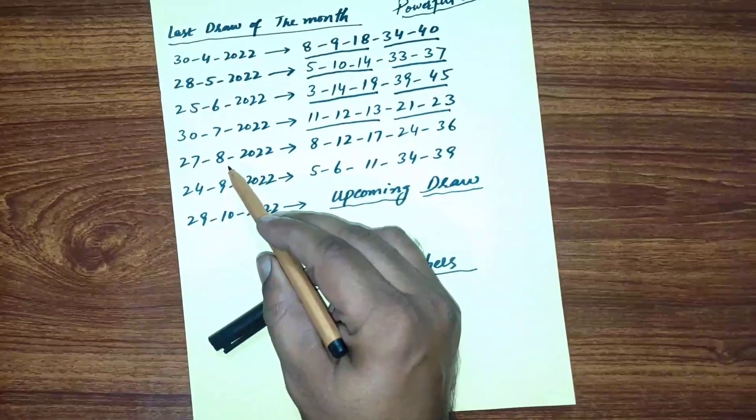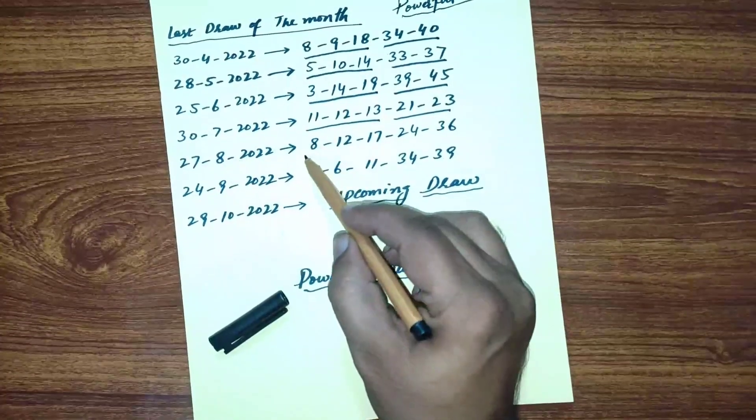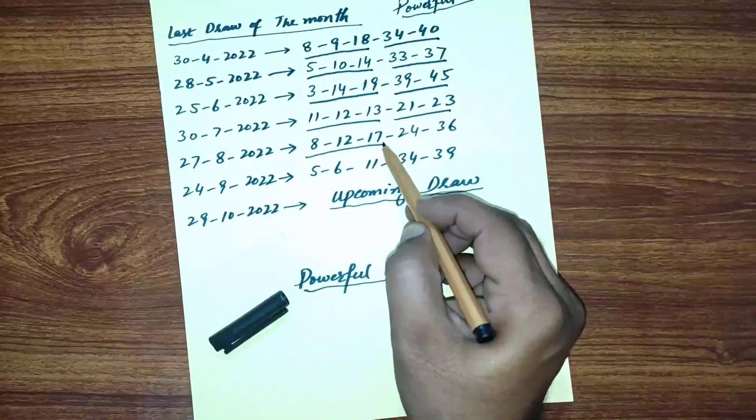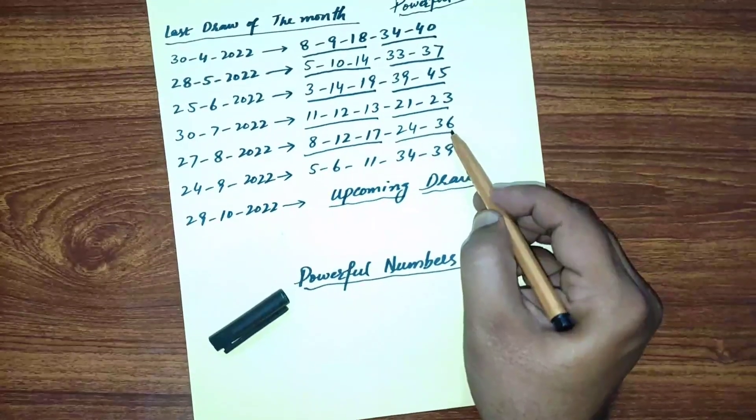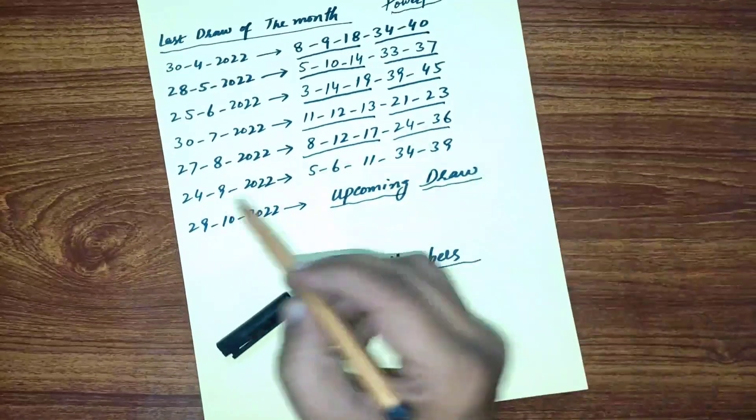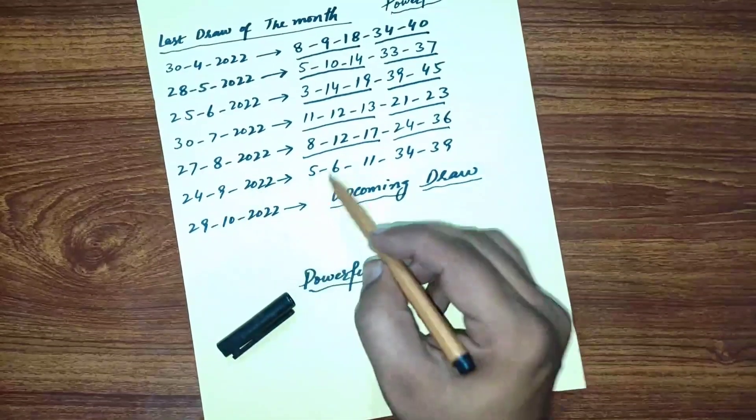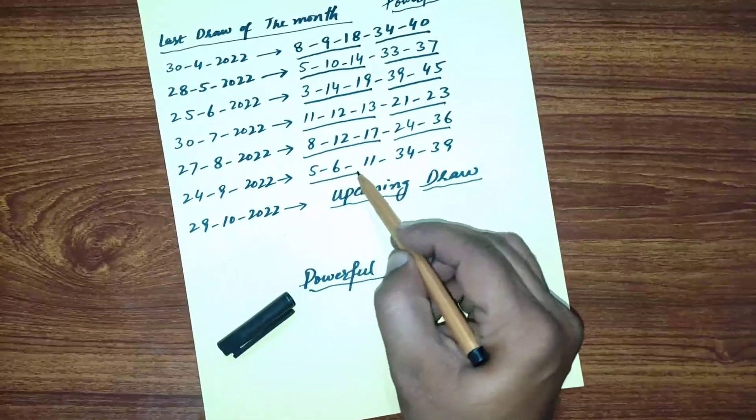In August's last draw, the same pattern: three numbers from 1 to 19 and two numbers from 20 to 49. In September, you can see again three numbers picked from 1 to 19.